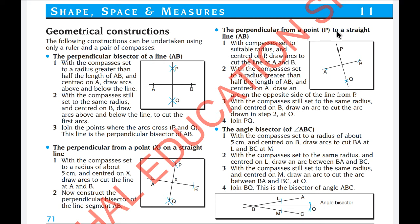The perpendicular from point P to a straight line AB. P is outside the given line, so you need to draw a perpendicular through here. With compasses set to a suitable radius and centered on P, draw arcs to cut the line at A and B. With the compasses set to a radius greater than half of the length of AB and centered on A, draw an arc on the opposite side of the line from P. With the compasses still set to the same radius and centered on B, draw an arc to cut the arc drawn in step 2.